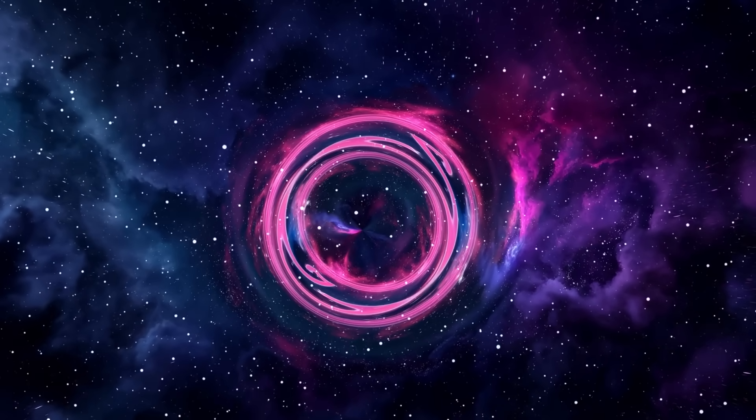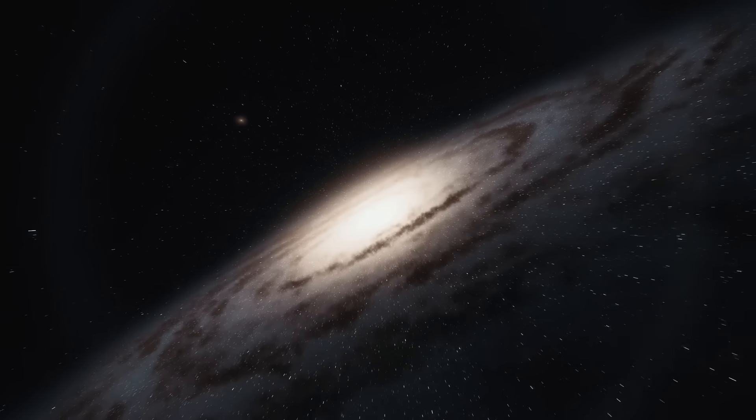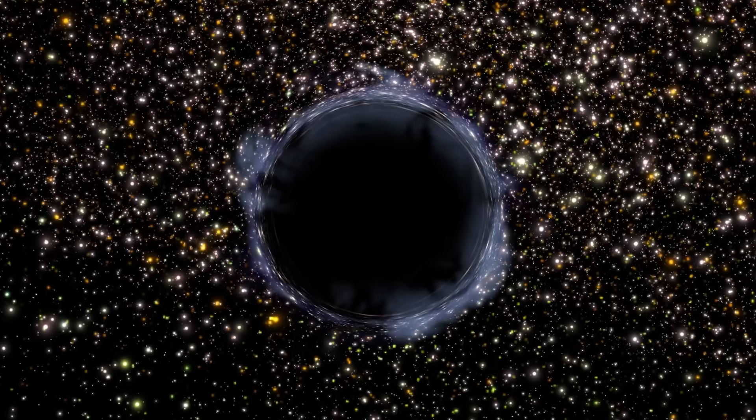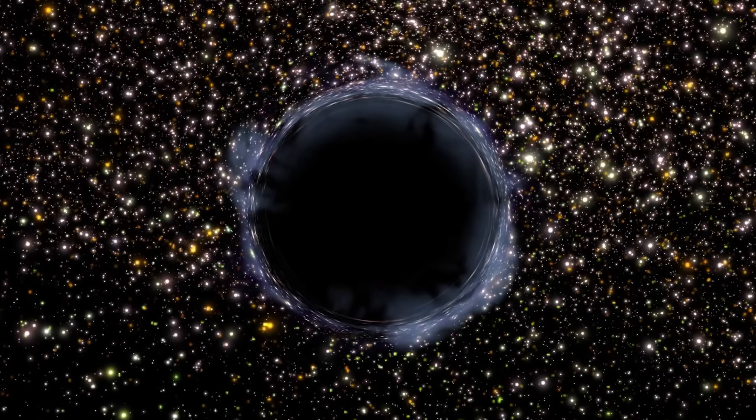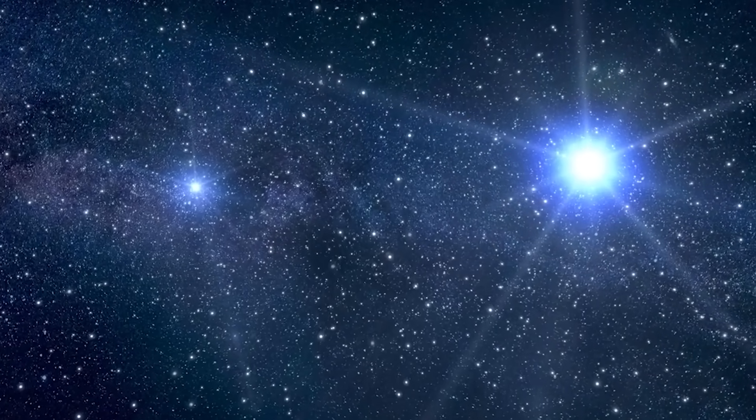Black holes, by their very nature, are invisible to our telescopes. They don't emit light. They devour it. So, how did scientists manage to spot this cosmic behemoth? The answer lies in the subtle dance of stars around it.